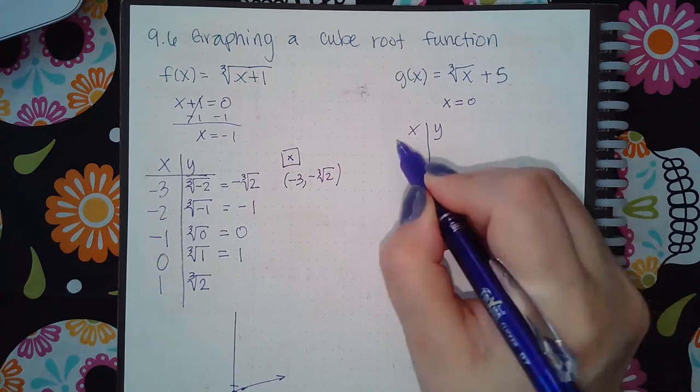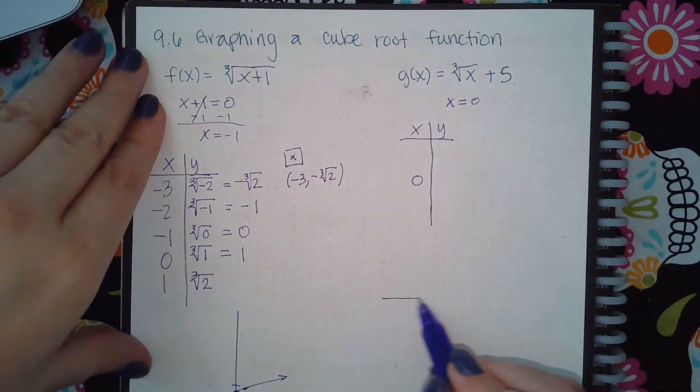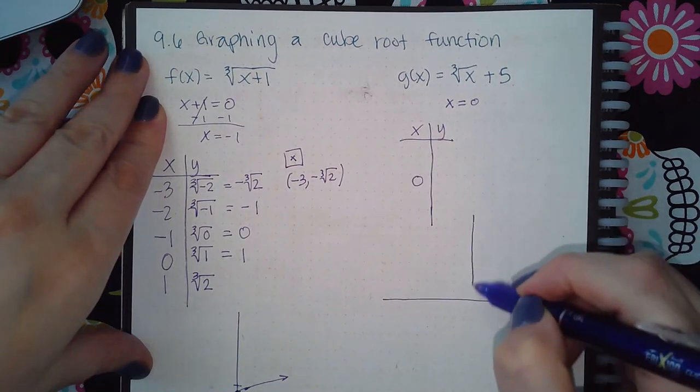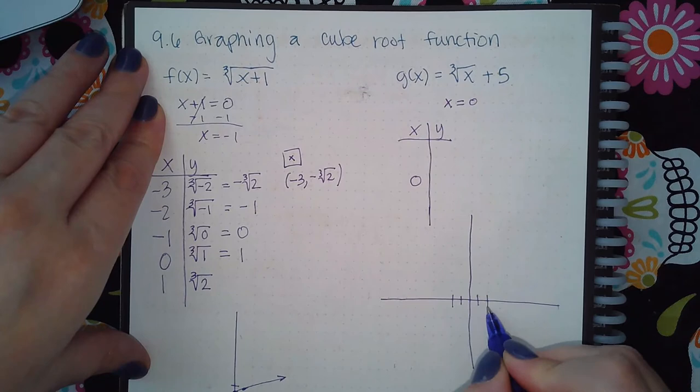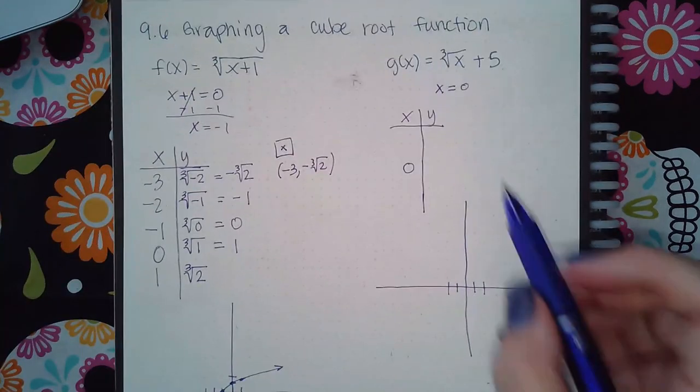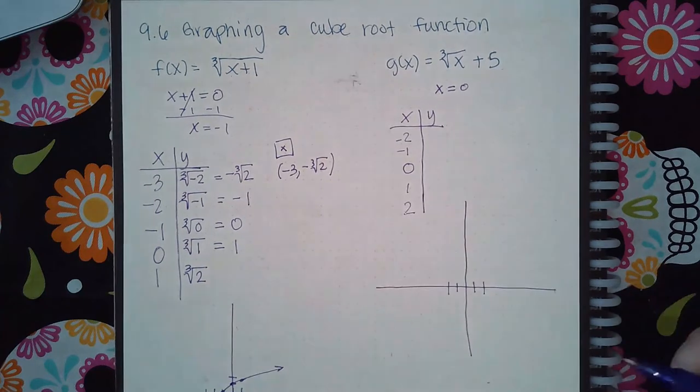I don't necessarily have to solve for x because it's already solved for. So I'm going to create my table and use 0 as the center. If I draw my graph, 0 is the center. I need two numbers to the left and two numbers to the right. So I'm going to use negative 1 and negative 2 and then positive 1 and positive 2.